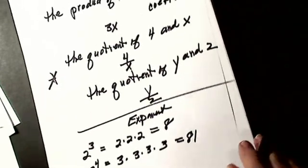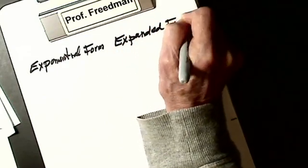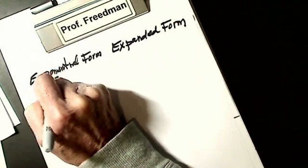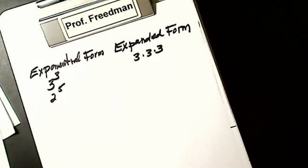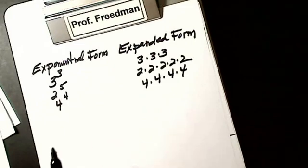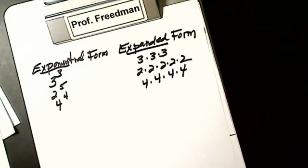I have to know the difference between exponential form and expanded form. For example, 3 to the third power in expanded form is 3 × 3 × 3. 2 to the fifth power means 2 times itself 5 times. 4 to the fourth power is 4 times itself 4 times. An easy way to remember: exponential form has the word 'exponent' in it — that's the one with the exponent. Expanded form is stretched out — that's the one that's stretched out.